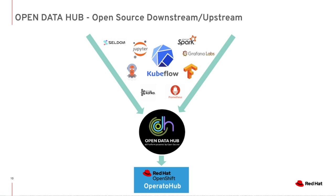Open Data Hub has an upstream and downstream relationship with many open source projects. The main downstream project to Open Data Hub is Kubeflow. However, Open Data Hub also downstreams from other open source projects such as Seldon, Kafka, Spark, Grafana, and Prometheus to provide a comprehensive end-to-end AI/ML platform on OpenShift. In many cases, enhancements and changes made in the Open Data Hub project are also upstreamed back to the original open source communities, such as the many changes upstream to Kubeflow for OpenShift platform support.